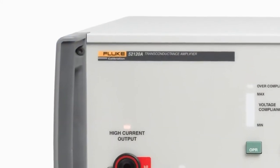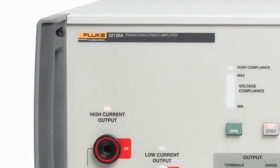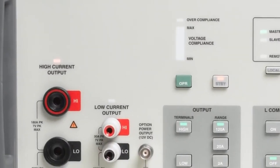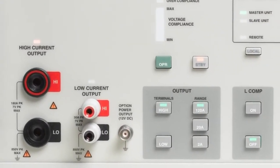In certain applications, the Fluke calibration 52120A transconductance amplifier can provide a boosted single phase of current output to 120A AC.